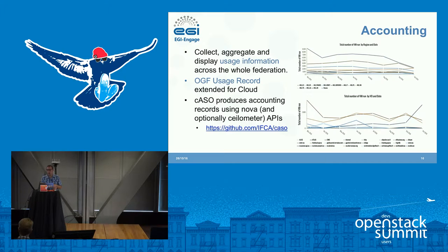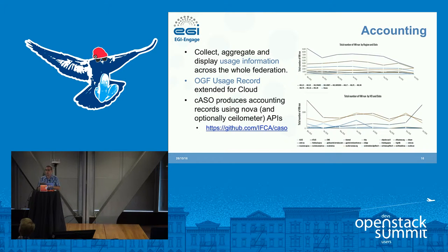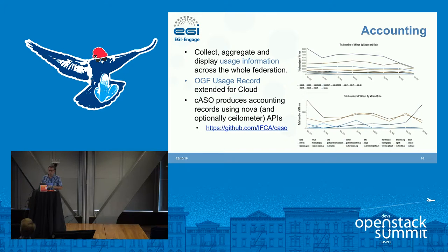For harmonized operation, we also have accounting. We have a central accounting repository where we collect and aggregate usage information, visible through a portal across the whole federation. We use the OGF Usage Record standard, lightly extended for cloud resources, and a software called CASO to get information from Nova and Ceilometer. The accounting portal shows total VMs run over the last couple of months, ordered by country and community — this information is publicly available.